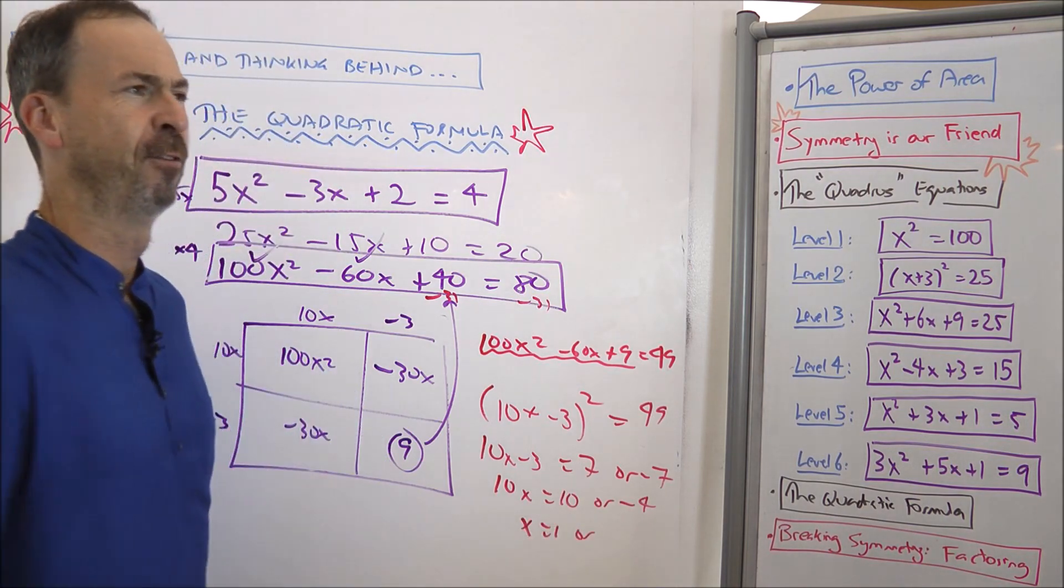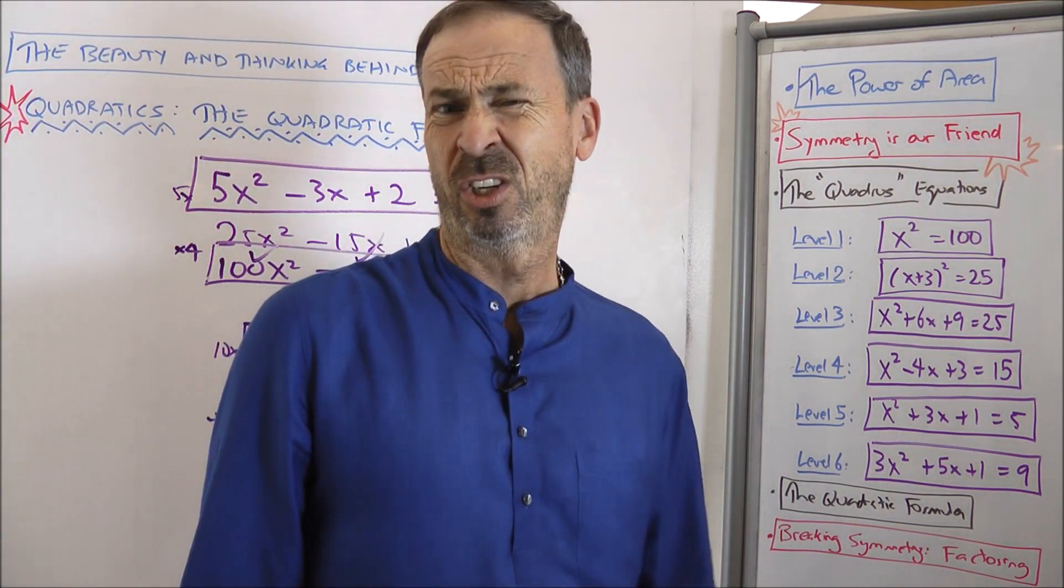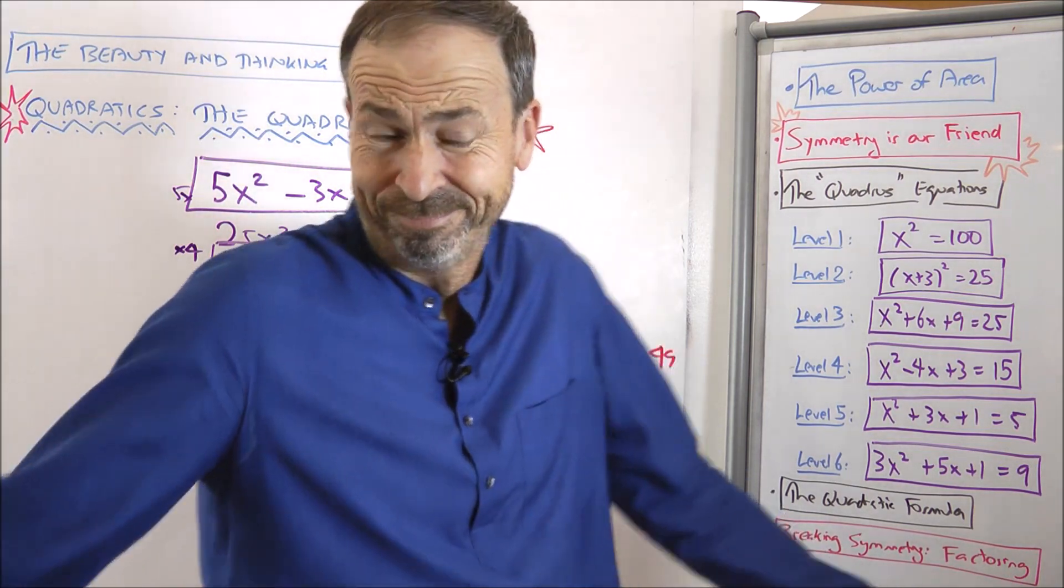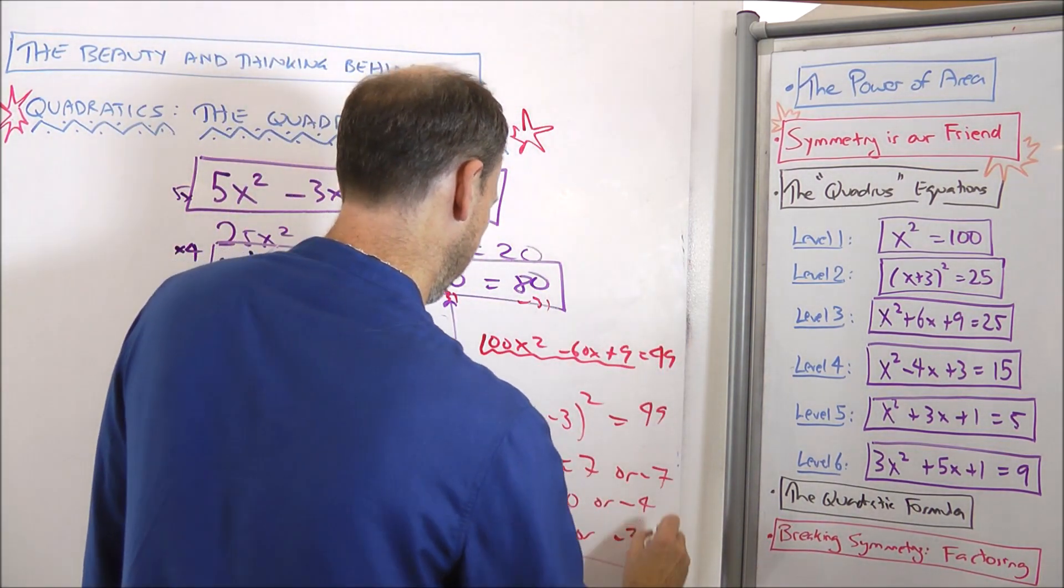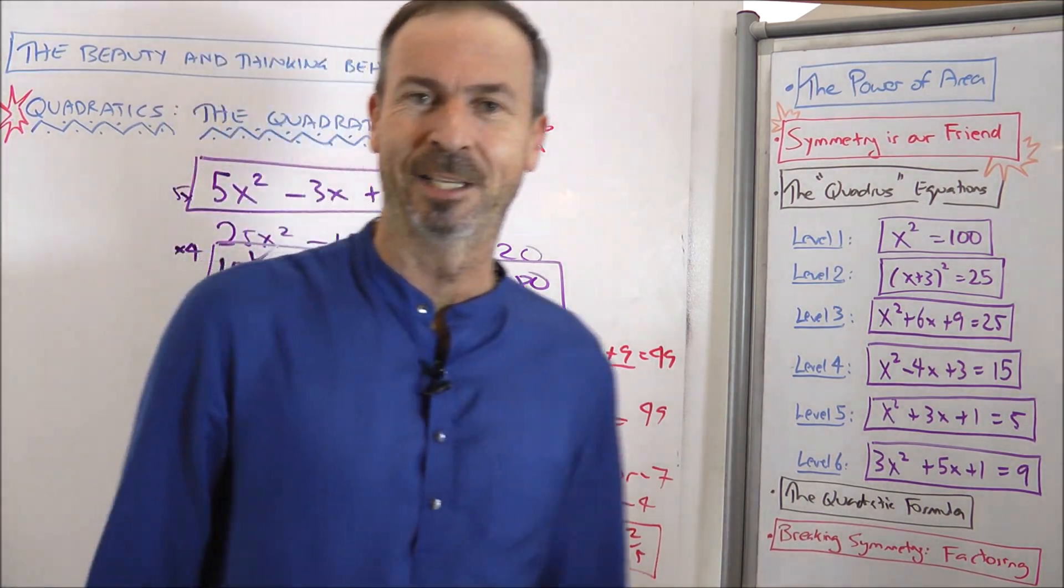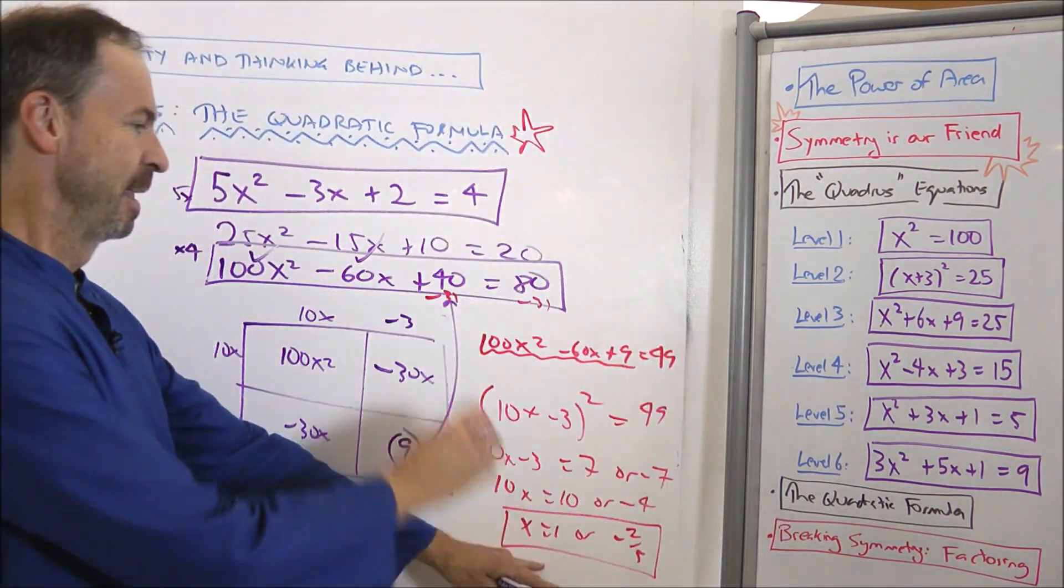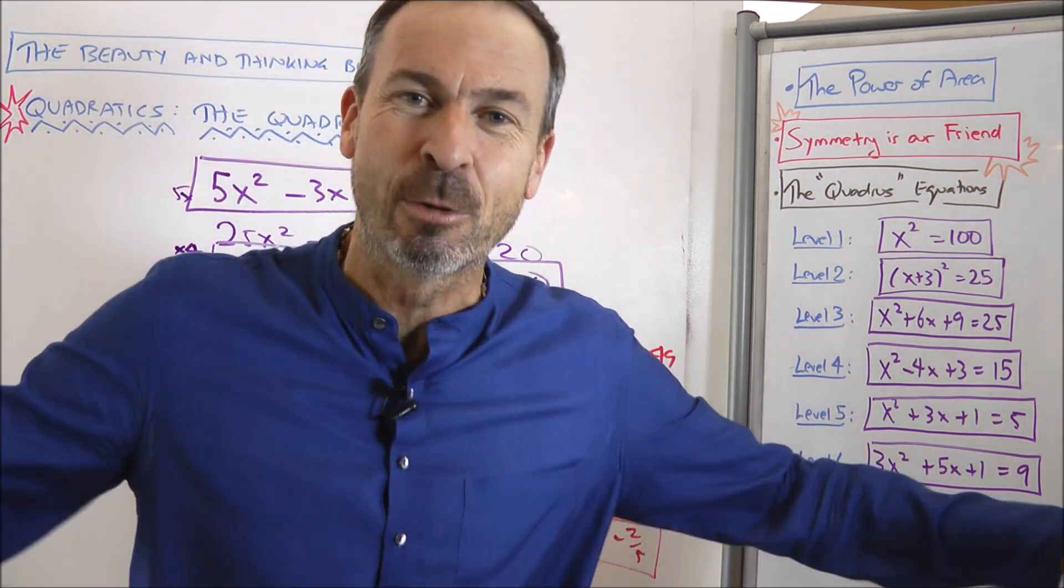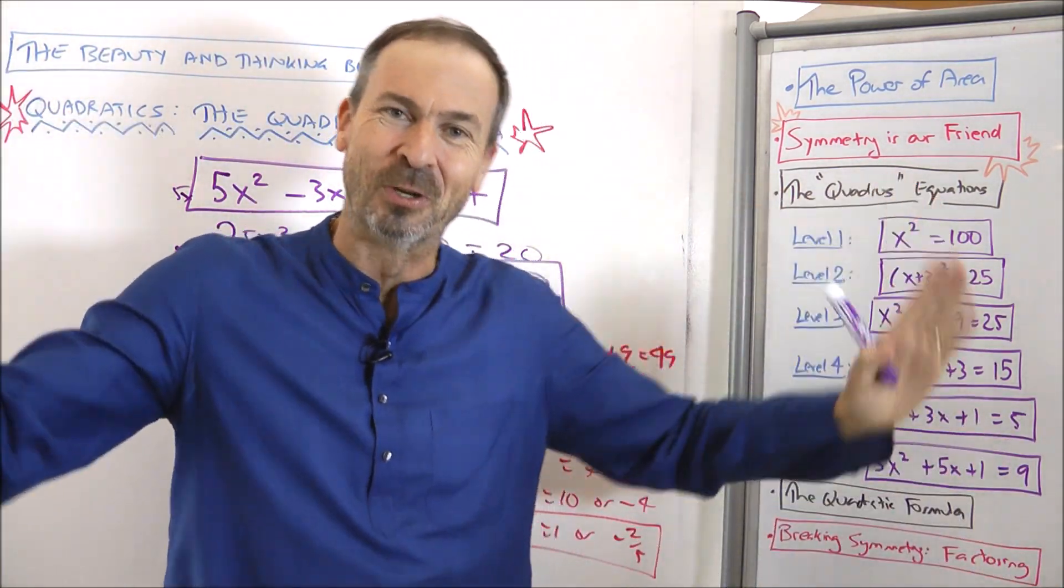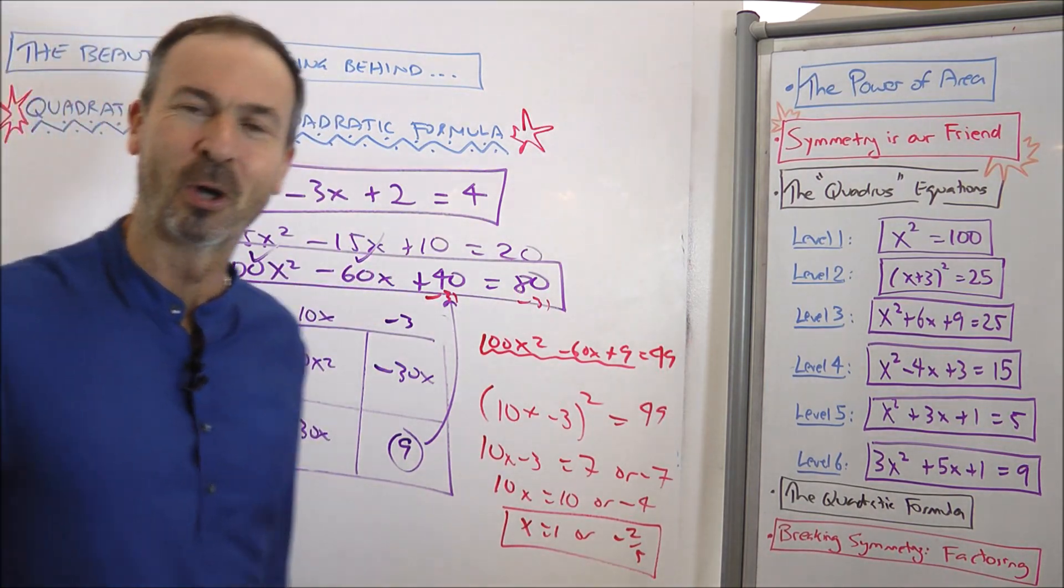Add 3. So 10x is 10 or negative 4. And divide by 10 now. x is 1 or negative 4 tenths. And I suppose I should reduce and simplify that fraction. So I'll simplify it too. So x is 1 or negative 2 fifths. Bingo. That is the quadris method. Literally completing the square. And it will solve any quadratic equation, that you want to do. You might have to push it through. It'll work beautifully.